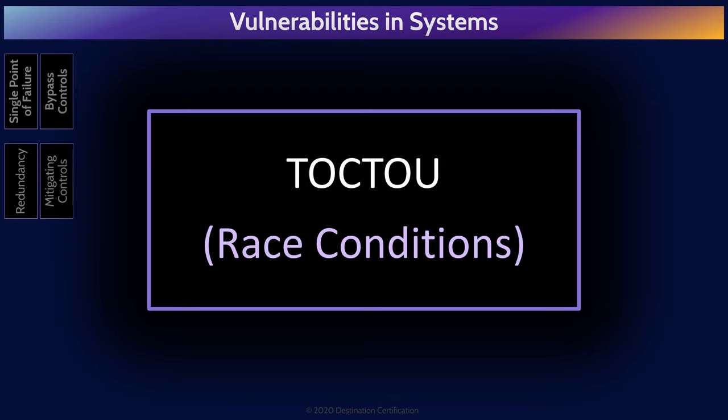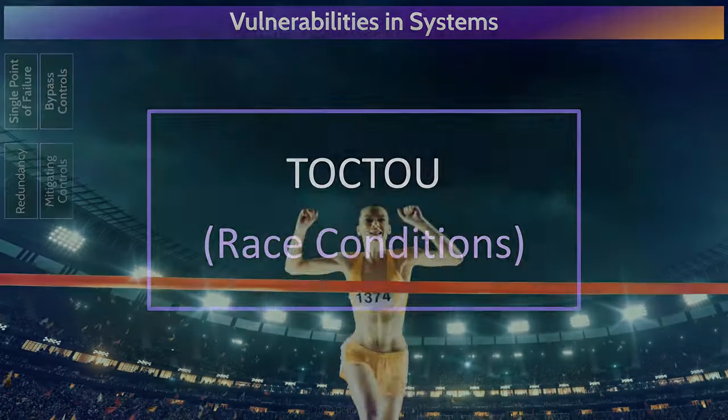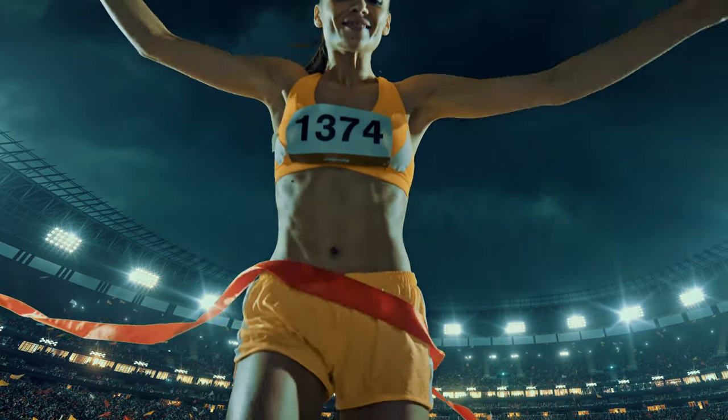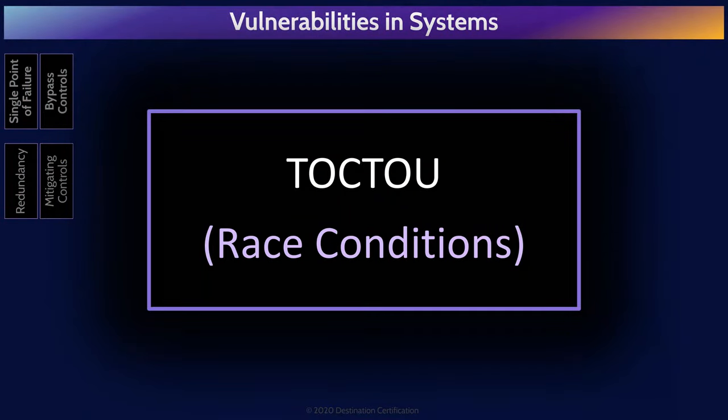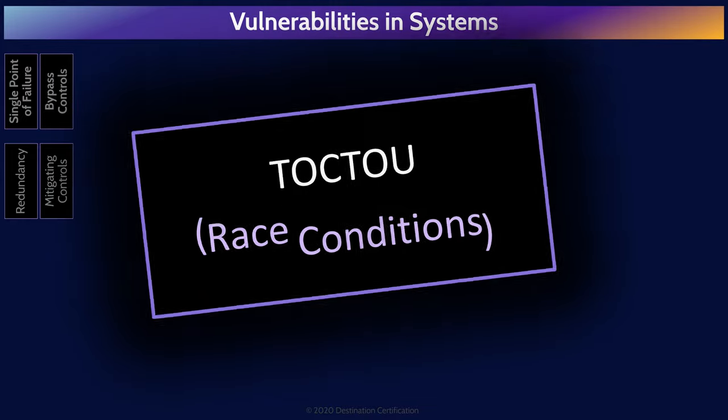TOCTOU — time of check, time of use — also known as race conditions, is a type of vulnerability where an application checks the state of a resource before using that resource. But the resource's state can be changed between the check and the use in a way that invalidates the results of the check, causing the application to perform invalid actions. In other words, an attacker attempts to race in and change a resource — a file, a variable, or some data in memory — between when the resource is checked and used.